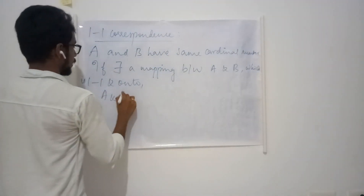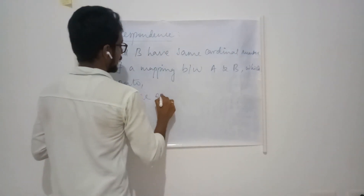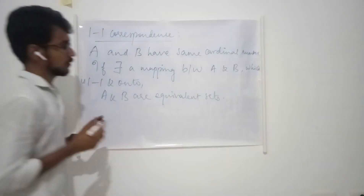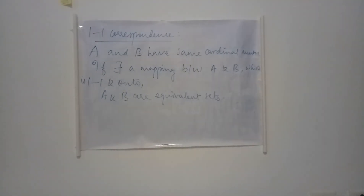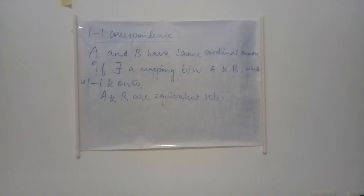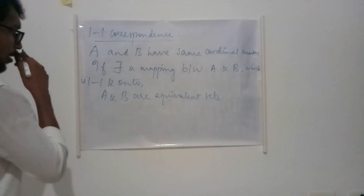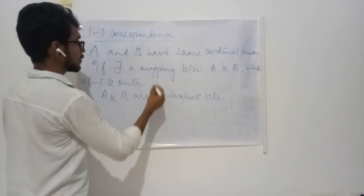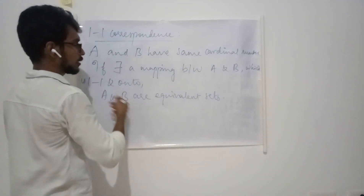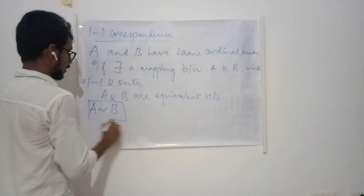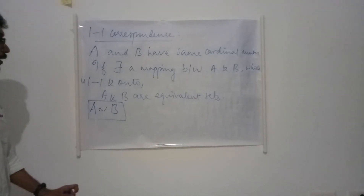A and B are also called equivalent sets. Cardinal number simply means they have the same number of elements. The cardinality of a set means the number of elements in that set. These two sets being equivalent, having the same cardinal number, and being in one-to-one correspondence are all equivalent statements. In notation, we write A is related to B.